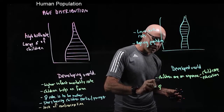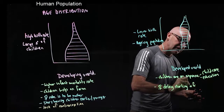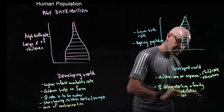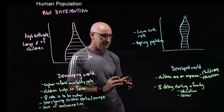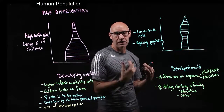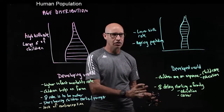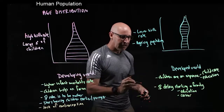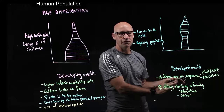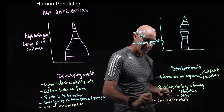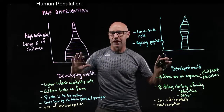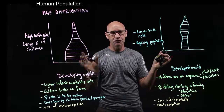Another factor is that women delay starting a family — they start having children later due to education and career. They want to have a career before they have children, so they might not start until their late thirties, and clearly you can't have as many children if you start that late. There's also a lower infant mortality, so families don't need to have spare children. And lastly, there's the availability of contraception. You can see that different factors in different parts of the world lead to differences in the age distribution of the population.